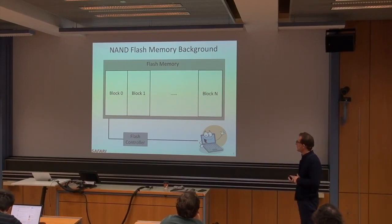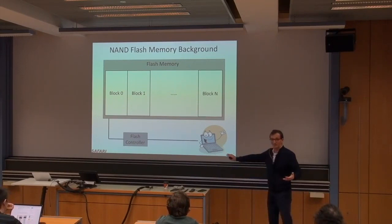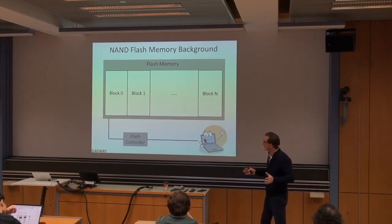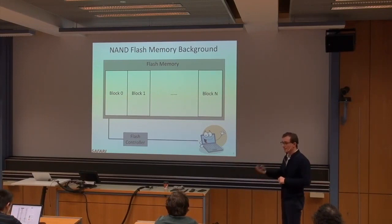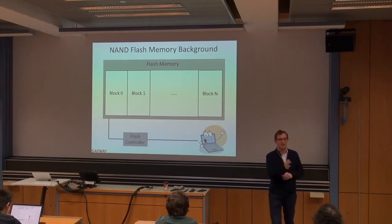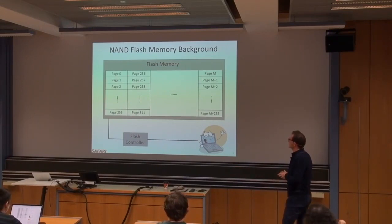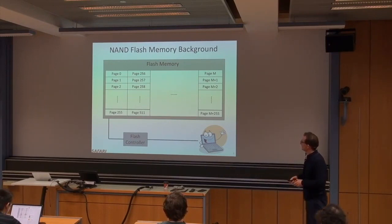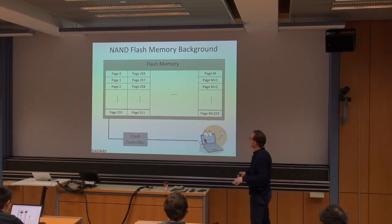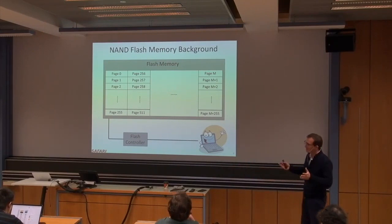Whenever you need to do a write, you initially erase an entire block. Block erases are done at block granularity to minimize the cost of erases. You can write at the page granularity and read at the page granularity. Erasing means setting the voltage level to the minimum possible across the entire block. A block can be quite large — for example, 256 pages, with each page about 8 to 16 kilobytes.